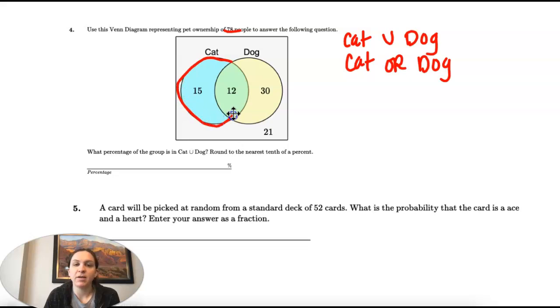They own a cat and they own a dog. So if we're given numbers, we would subtract the middle, but we're just going to count the middle one time. So 15 plus 12 that are both plus 30.